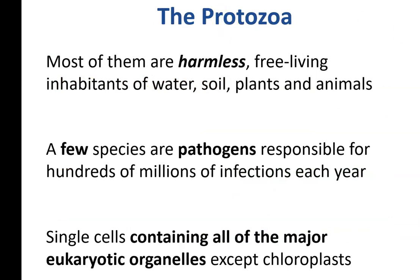The majority of protozoa in the world are harmless critters — little things that float around in water, wet soil, or on plants and animals. You probably have protozoa living in your gut. It's the ones that are pathogenic that can cause problems. Most of them are single cells with all of the major eukaryotic organelles, but they don't have chloroplasts and they don't have cell walls.